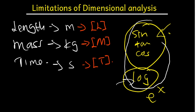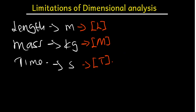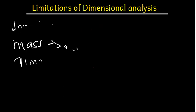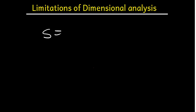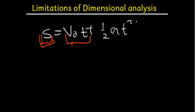Whenever you see these functions under dimensional analysis, we are going to treat them as a constant. The fourth and last limitation is that dimensional analysis cannot derive more than one part of an equation — it can only give us one part. For example, if we have the displacement equation: s = v_initial × T + ½aT², dimensional analysis cannot prove that this part equals the whole right-hand side. It can only help us prove one part at a time.